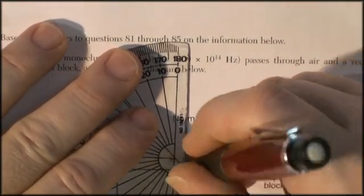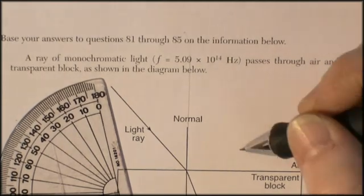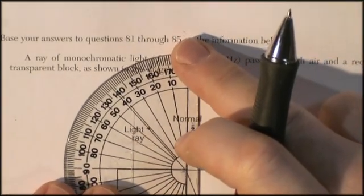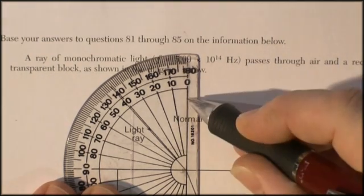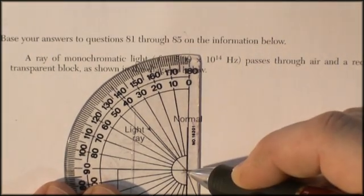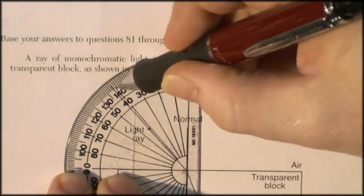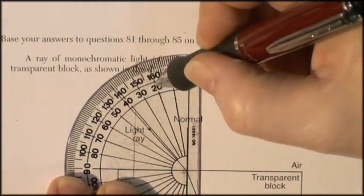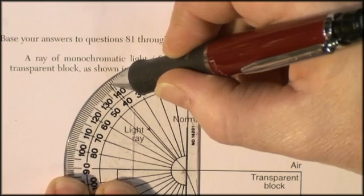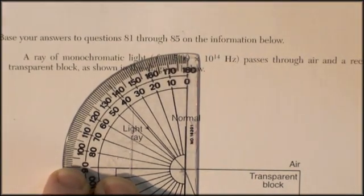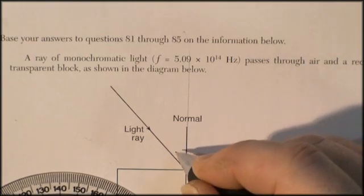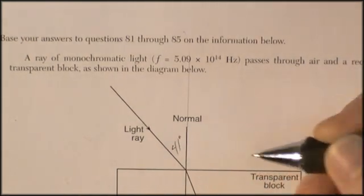Using a protractor, determine the angle of incidence of the light ray as it enters the transparent block. So it wants us to physically measure this. Keeping in mind that to measure an angle you need two reference points. I'm going to take this normal and make it longer so it intersects the parts of my protractor. Then I put the protractor on it, line it up with the normal. I'm getting, what do you figure, 10, 20, 30, 41, maybe 41, maybe 42. I could zoom in there but I can look with my eyes. I'm going to call it 41 degrees.